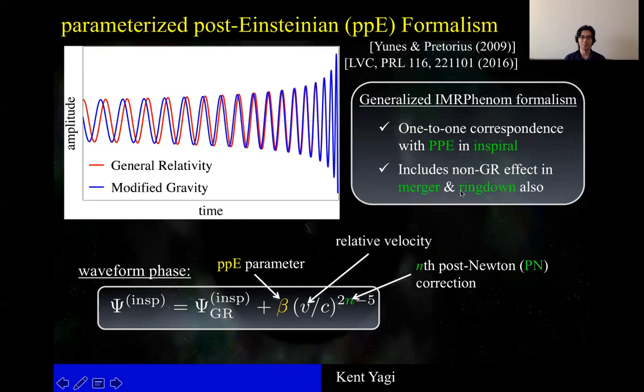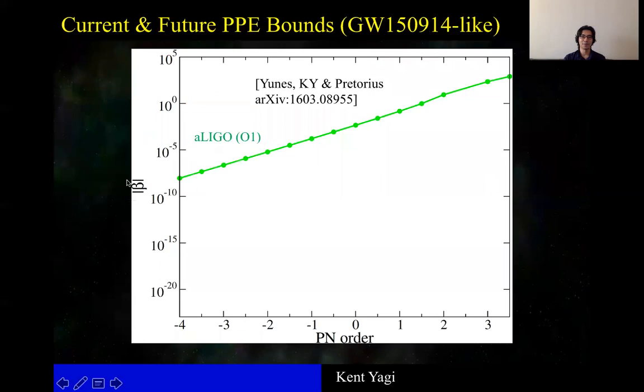Now, I'm going to show you the bound on ppE parameter beta as a function of at which post-Einsteinian order the correction enters using GW150914 event,